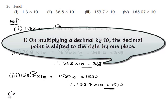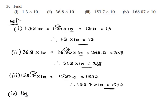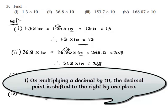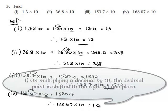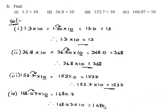Take down the fourth one: 168.07 multiplied by 10. Here 1 is followed by only one zero. Therefore the decimal point moves one digit to the right, which gives 1680.7. Therefore 168.07 multiplied by 10 is equal to 1680.7.